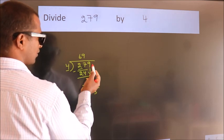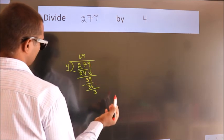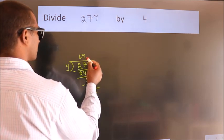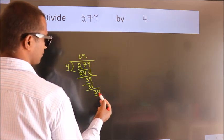After this, no more numbers to bring down. So what we do is, we put a dot and take 0. So 30.